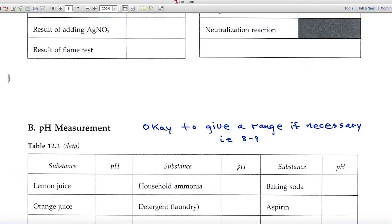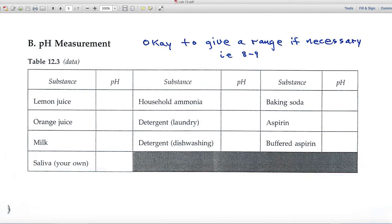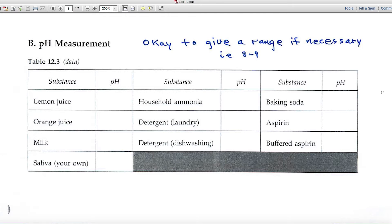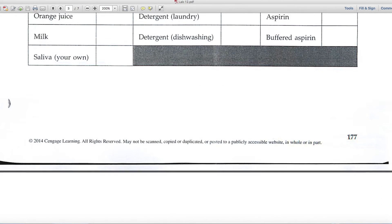Part B deals with pH measurement, and it's okay if you need to use a pH range, for example, 8 to 9 or 10 to 11, because as you look at these pH values, some of them will be a little hard to differentiate. So ranges are okay.